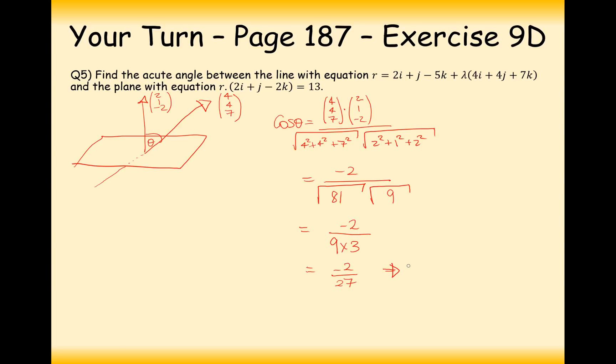From here, we can now work out the theta angle, which is going to be inverse cos of minus 2 divided by 27, which is going to give us a 94.2 degree angle.